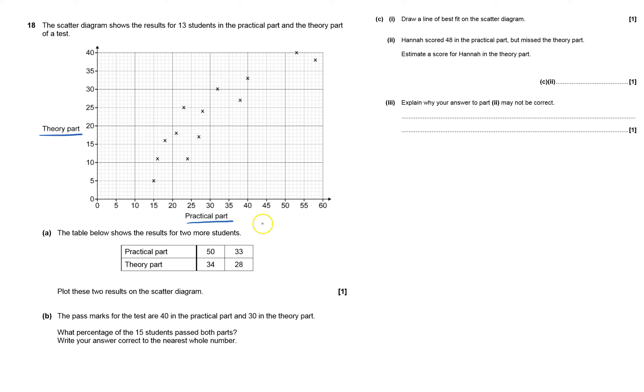So 50 practical, so go across 50, that's easy, up to 34. Check the scale, yes, each little square represents one, so that's nice and easy. Go up 50, that's 30, and that's 34 there. Done that one.